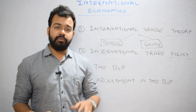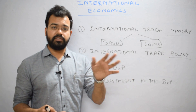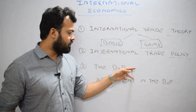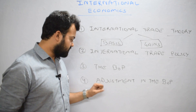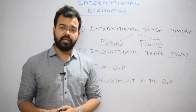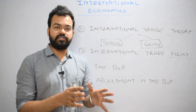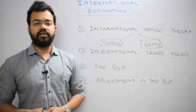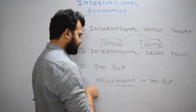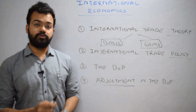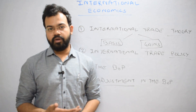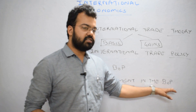The third pillar is balance of payment, which is simply the systematic account of a domestic country with the rest of the world — total expenditure in relation to total receipts, arriving at a figure known as the balance of payment. The fourth pillar is adjustment in the balance of payment. If there is disequilibrium — a country experiencing surplus or deficit — adjustment is done using monetary instruments like exchange rate. The central bank can alter the exchange rate through devaluation or revaluation to correct temporary balance of payment disequilibria.